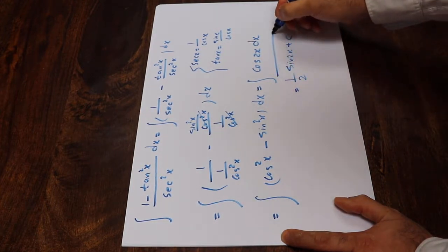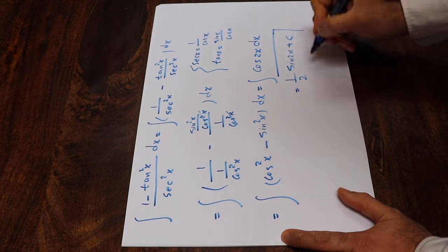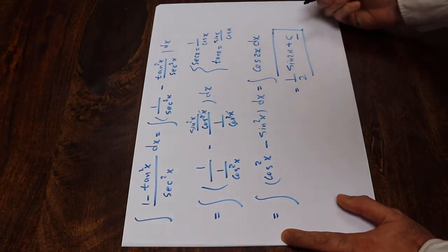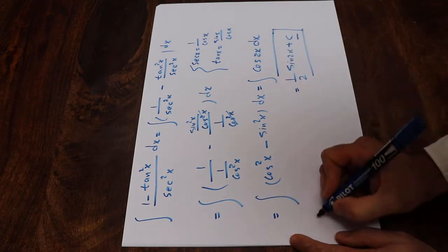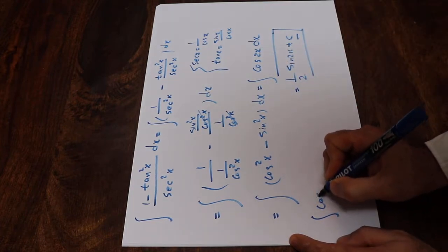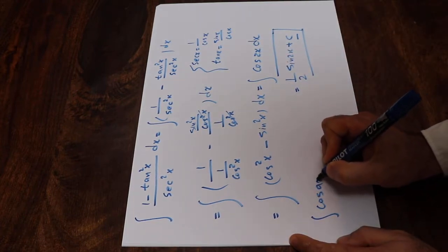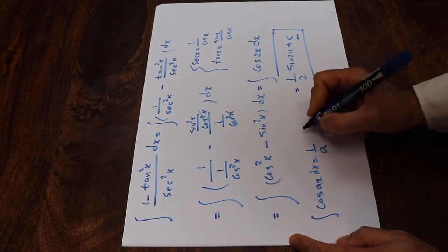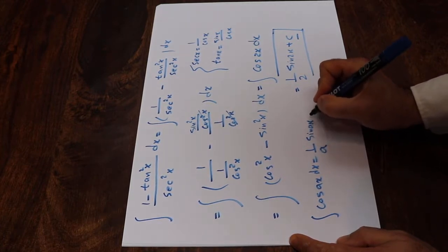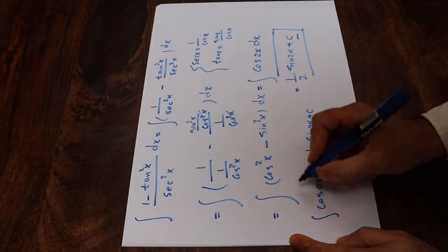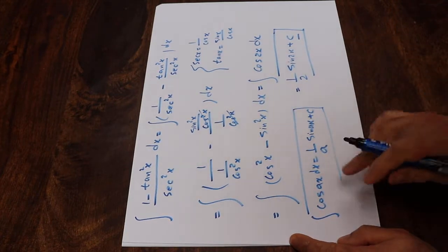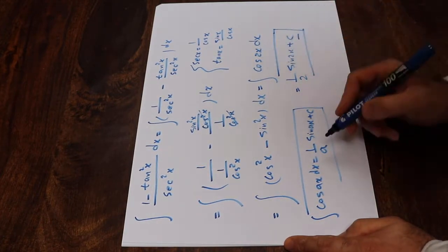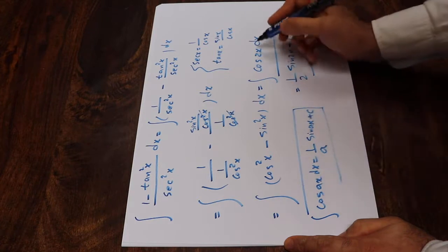And this is the solution to our integral. C here is the constant of integration. Note that the integral of cosine ax dx is equal to 1 divided by a times sine ax plus C. That's the formula you should know from the table of integrals, and in this case a was equal to 2.